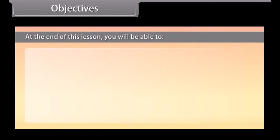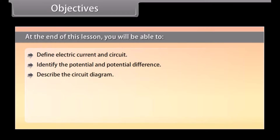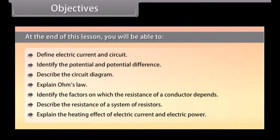At the end of this lesson, you will be able to: define electric current and circuit; identify the potential and potential difference; describe the circuit diagram; explain Ohm's law; identify the factors on which the resistance of a conductor depends; describe the resistance of a system of resistors; and explain the heating effect of electric current and electric power.